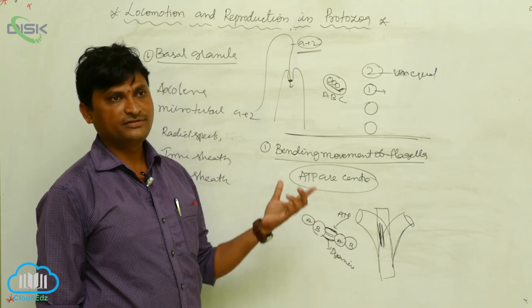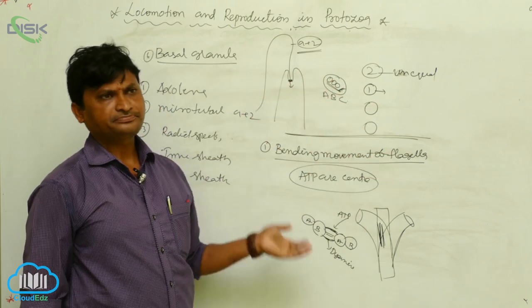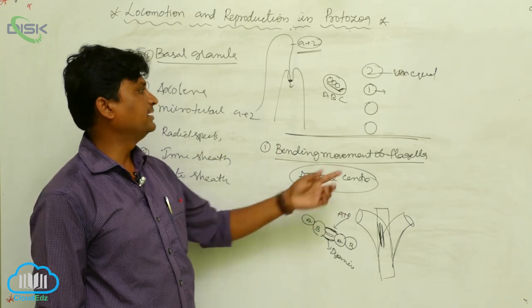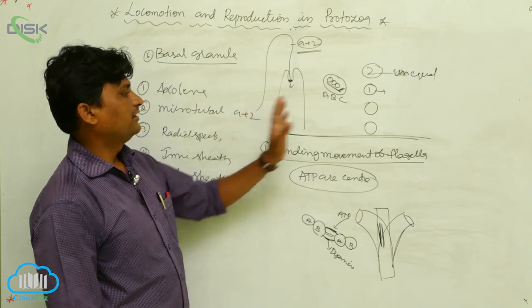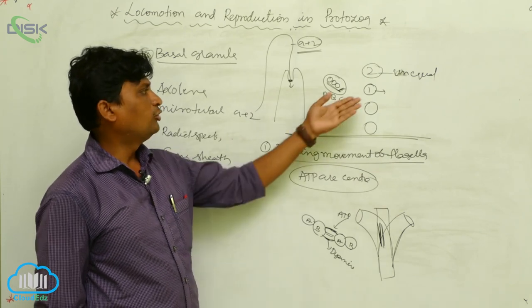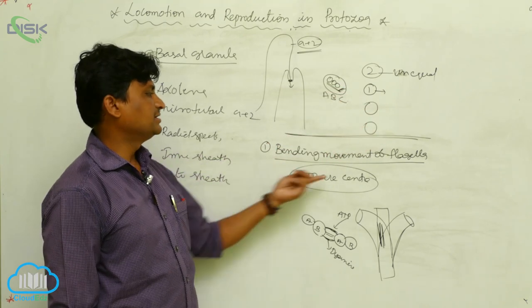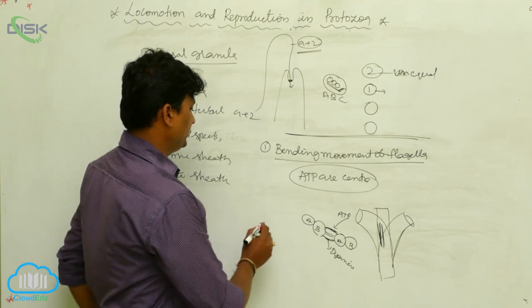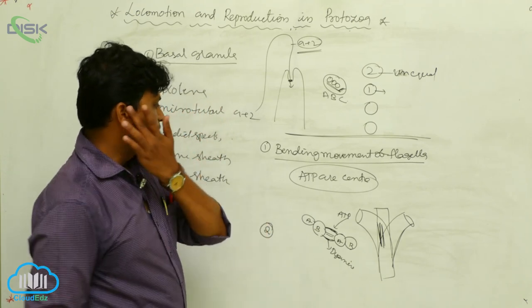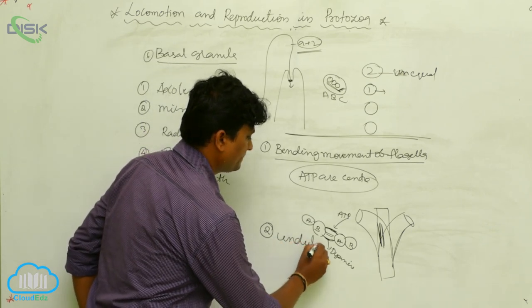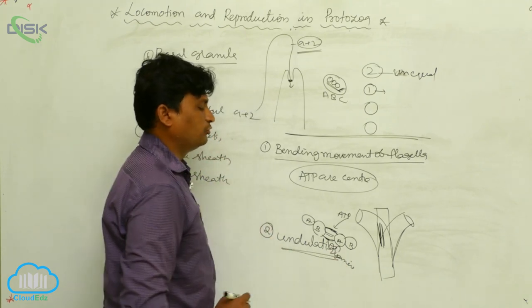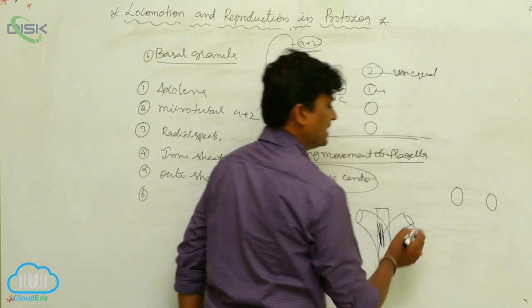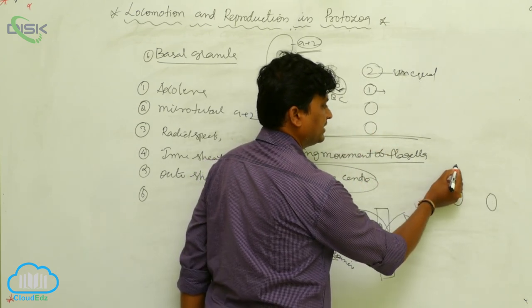Rhizoporia organisms use pseudopodia for capturing food material and for movement. The second movement type is the flagella movement, including the ultrastructure and number of flagella per organism. The third type is the bending moment. Additionally, flagella show undulation movement — wave-like movements called undulation moments. There are two types: one where wave-like movement starts from the base of the organism towards the tip.